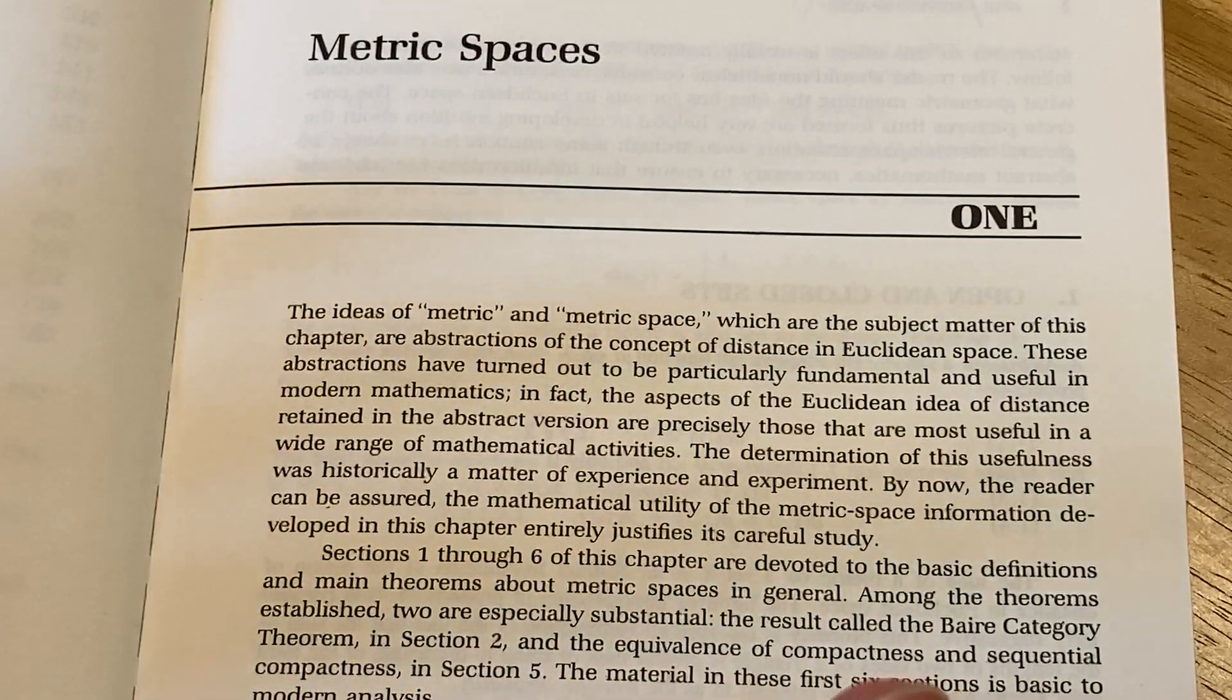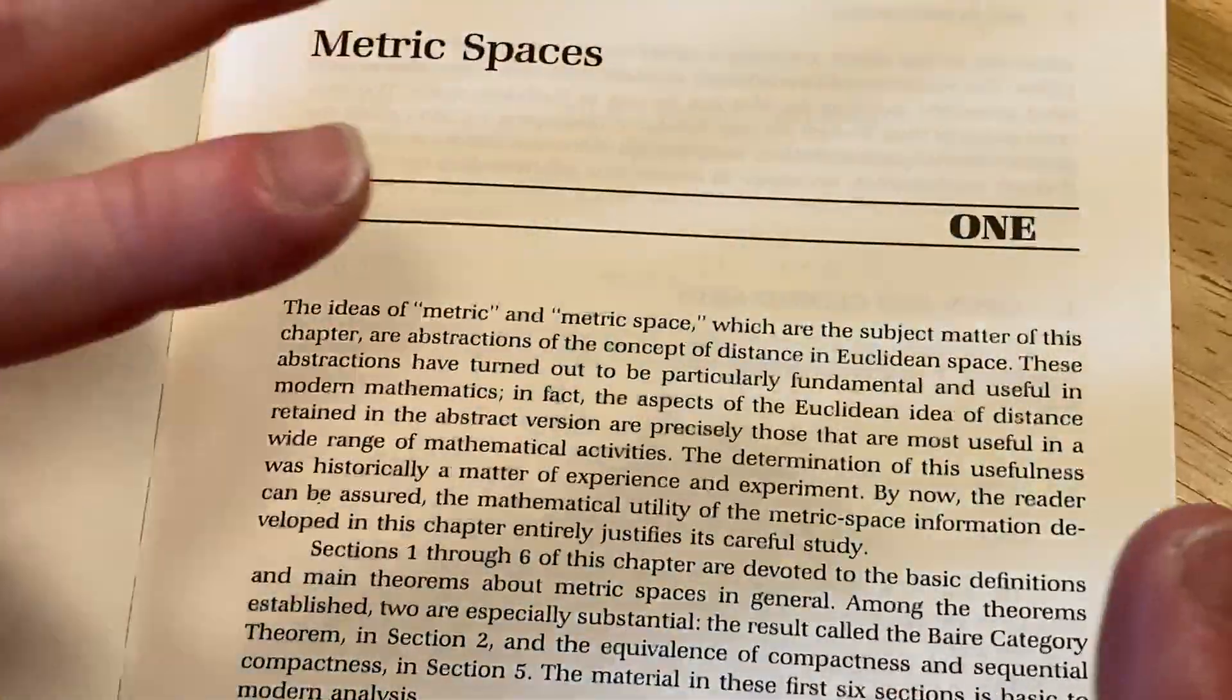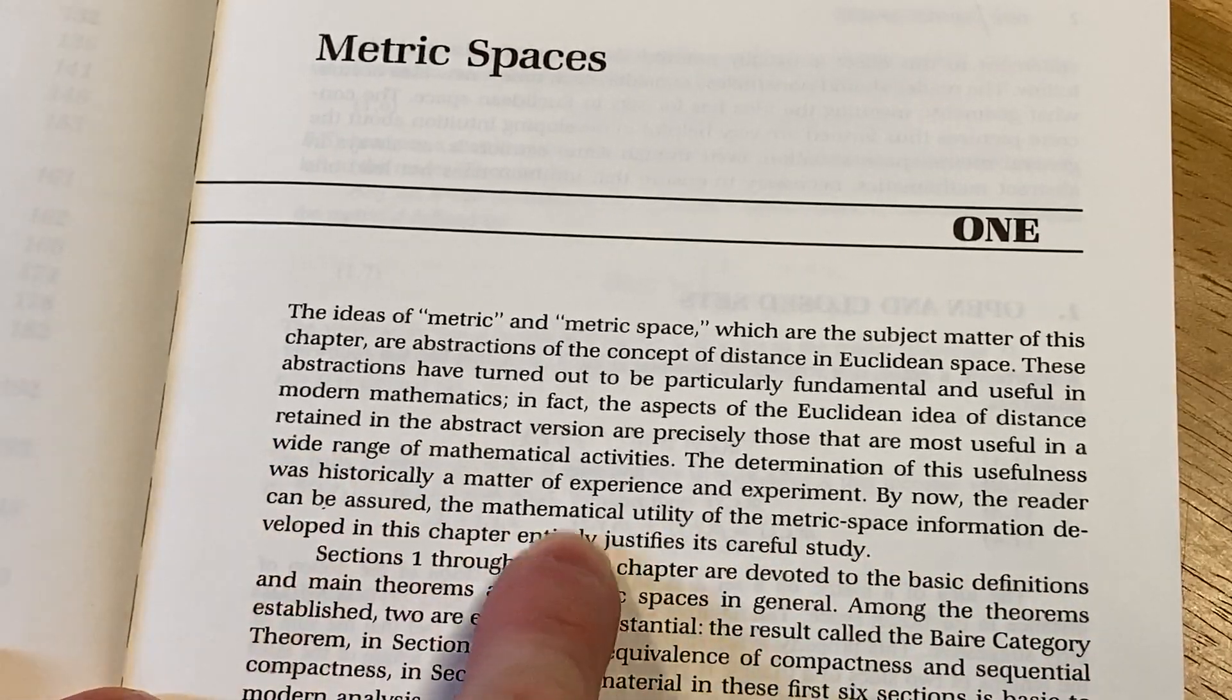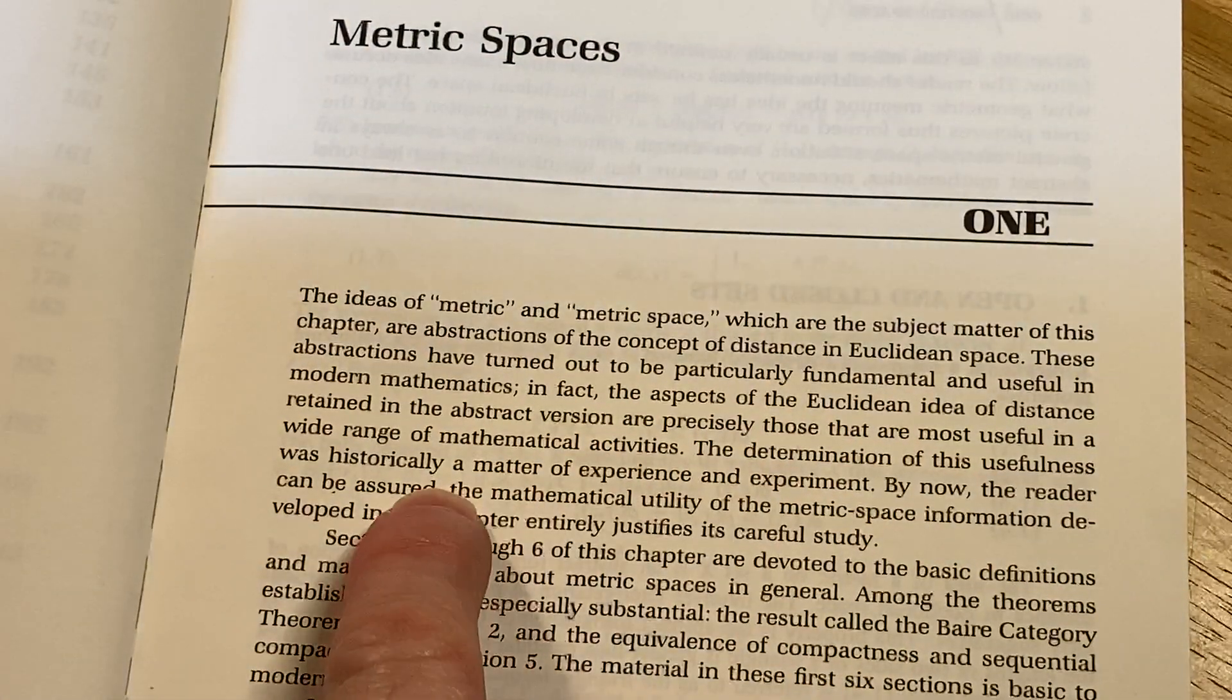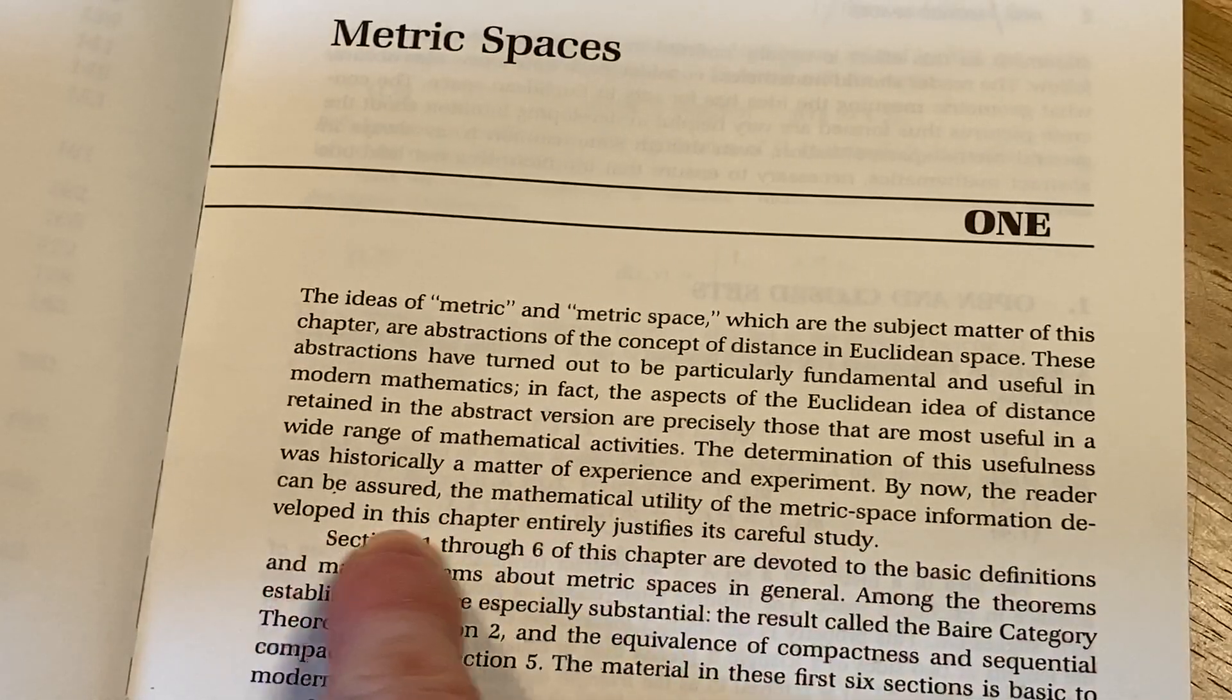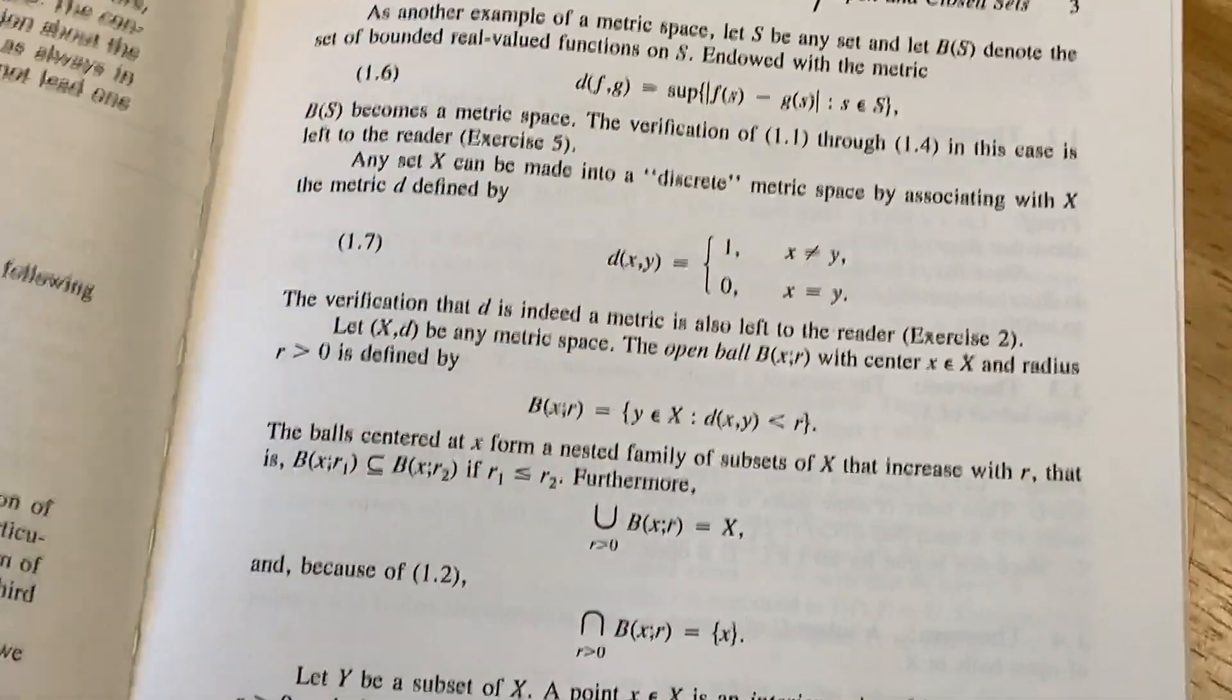And the things there that that function enjoys, like the triangle inequality, symmetry, certain things, those things can be generalized, and you can look at other spaces, and those are the things that are useful here. That's what he's talking about, a wide range of mathematical activities. The determination of this usefulness was historically a matter of experience and experiment. By now, the reader can be assured the mathematical utility of the metric space information developed in this chapter entirely justifies its careful study. Wow. This is a beautiful book. Okay, let's just go right to it.